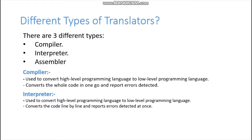What the interpreter does is: it takes a set of instructions and processes them one line at a time. If there are no errors, it gives you an intermediate object code which shows the output on screen immediately. The output is highlighted at the same time. However, the flaw is that it processes line by line, so if you get an error on any line, it will terminate at that point.